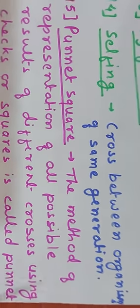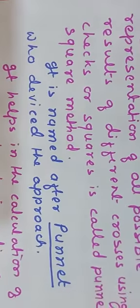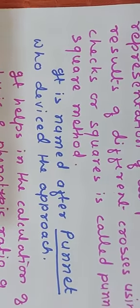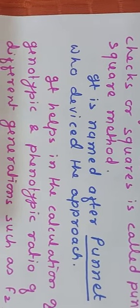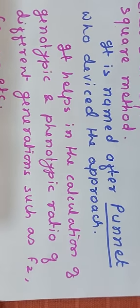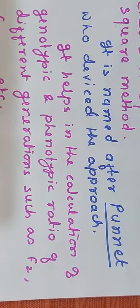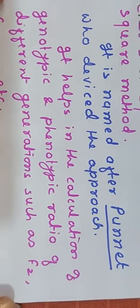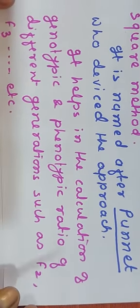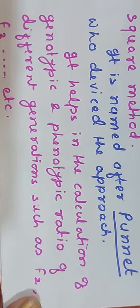The Punnett square is named after the scientist who devised this approach. It helps in the calculation of genotypic and phenotypic ratios of different generations such as F2 and F3.